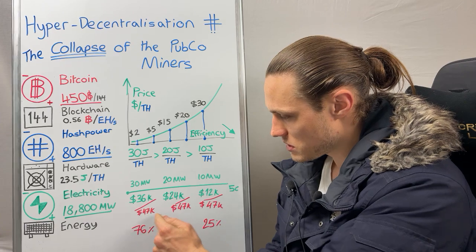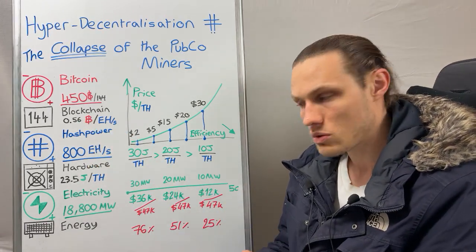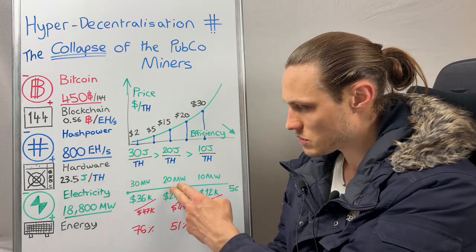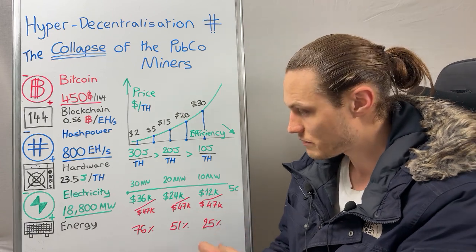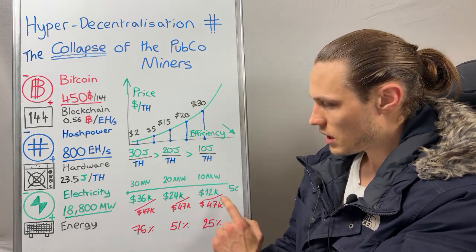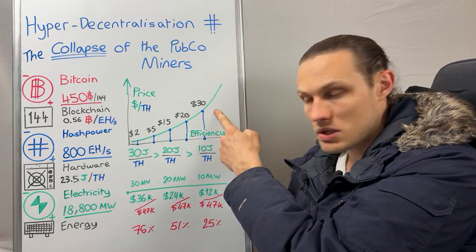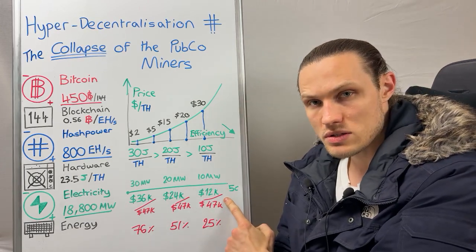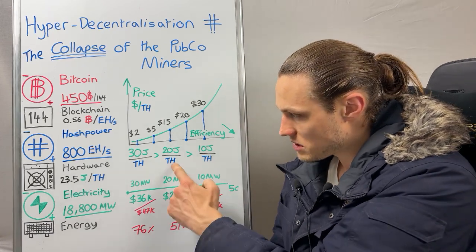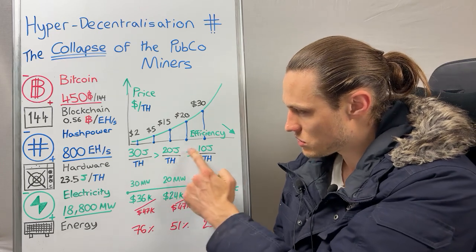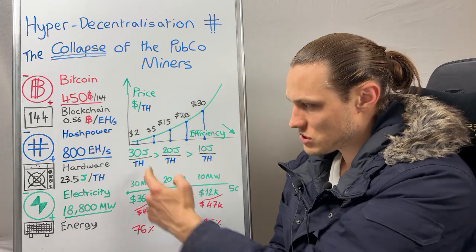All three of these computers produce $47,000 worth of Bitcoin, but they have three different types of electrical cost: 30 megawatts, 20 megawatts, and 10 megawatts at 5 cents a kilowatt. The 10 joules per terahash — the most efficient, most expensive computer — has an electrical bill of $12,000 a day versus the $47,000 mined. All three mine the same amount, but the 20 joule machine has twice the electrical bill and the 30 joule machine three times as much.